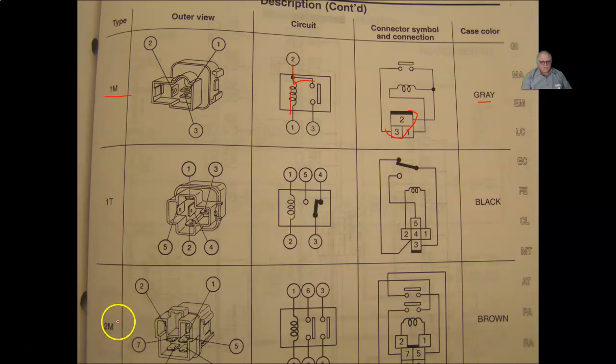They have a 2M, which is a two make. Both contacts inside there. So this relay would actually have three circuits. It's going to have your control side and two switch sides. It's a brown relay.